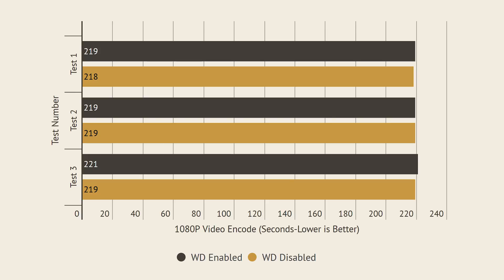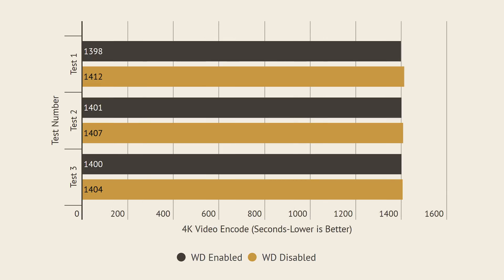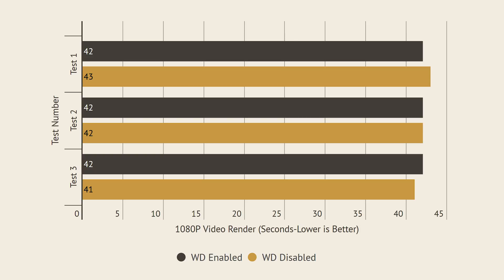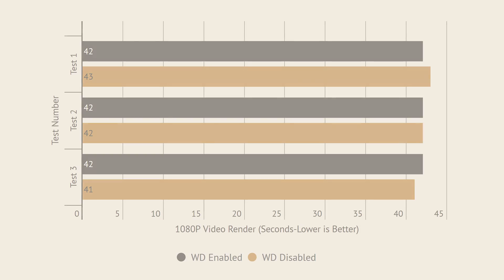The last set of tests were the rendering and encoding tests. I encoded a video file in 1080p and in 4K using Adobe Media Encoder and saw a negligible difference on both tests. I then rendered out a video in 4K and in 1080p inside of Adobe Premiere, and also had little to no difference.